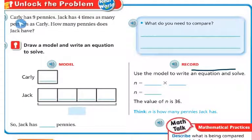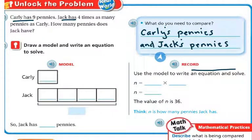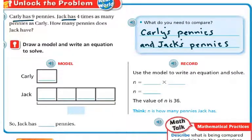Alright, let's look at a problem. Carly has 9 pennies. Jack has 4 times as many pennies as Carly. How many pennies does Jack have? So we can draw a model and write an equation to solve. So first, what am I comparing? What do I need to compare? Well, what I need to compare is Carly's pennies and Jack's pennies. So in my model, it says Carly has 9 pennies.